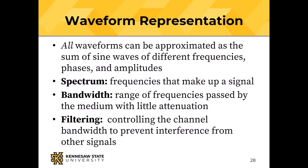All waveforms can be approximated as the sum of sine waves of different frequencies. Spectrum is the set of frequencies that make up a signal. Bandwidth is the range of those frequencies. Filtering lets us control bandwidth — that's how SiriusXM receivers and radio/TV tuners pick one channel from all available.